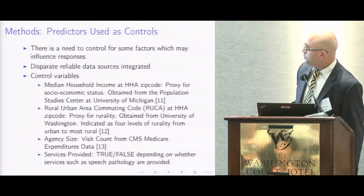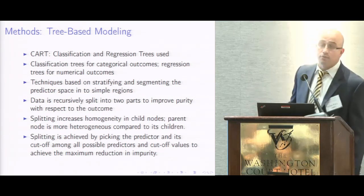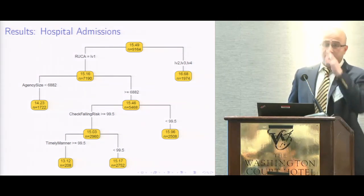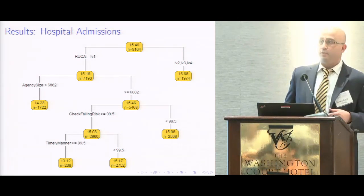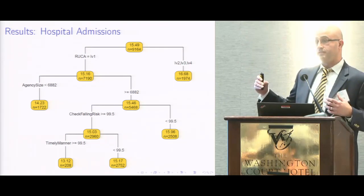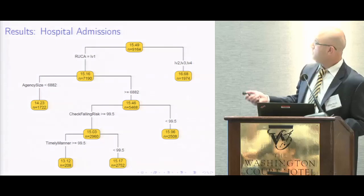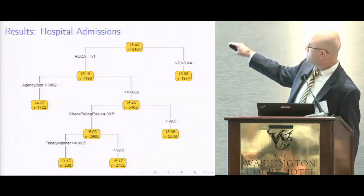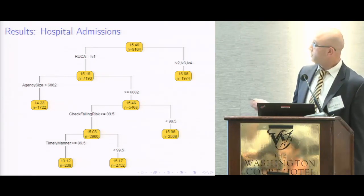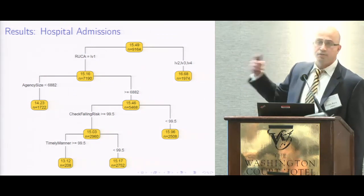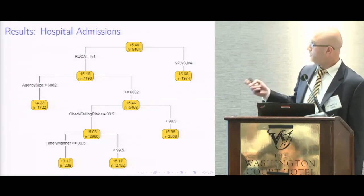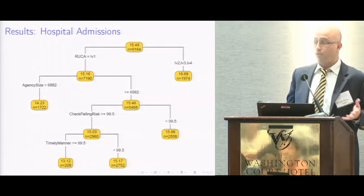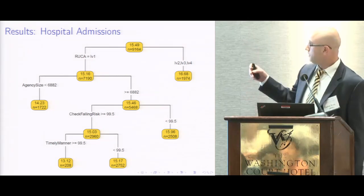These are the predictors used, and we used a method called tree-based modeling. Interestingly, our control variables appeared at the top of the model. In a tree-based model, the variable that reduces variance most will appear at the top. We see the rurality variable — rural agencies have a higher hospital admission rate. The others have 15.16. We recursively split the data sets, and the next variable appeared to be agency size. Larger agencies, possibly because of coordination issues, have higher hospital admission rates.